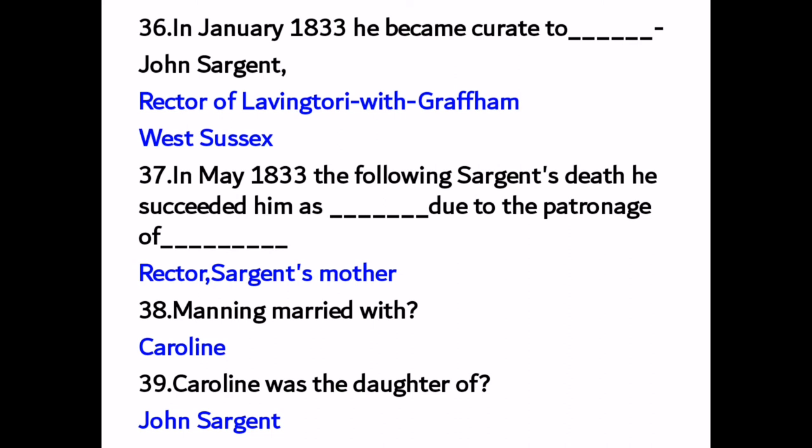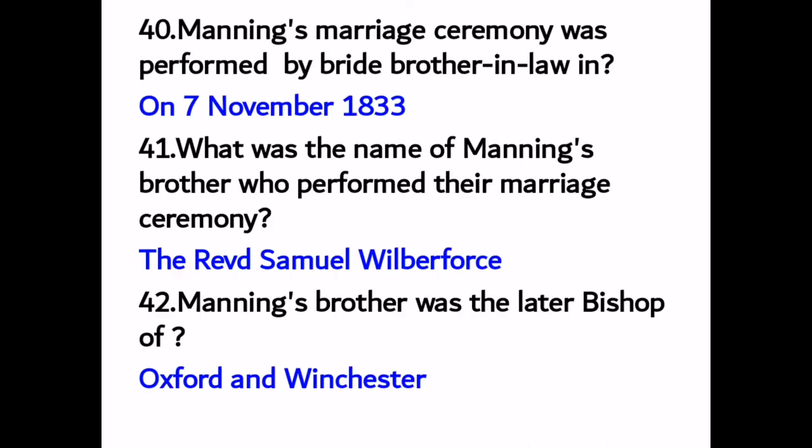Number thirty-eight: Manning married Caroline, who was the daughter of John Sergeant. Number forty: Manning's marriage ceremony was performed by the bride's brother on 7th November 1833.